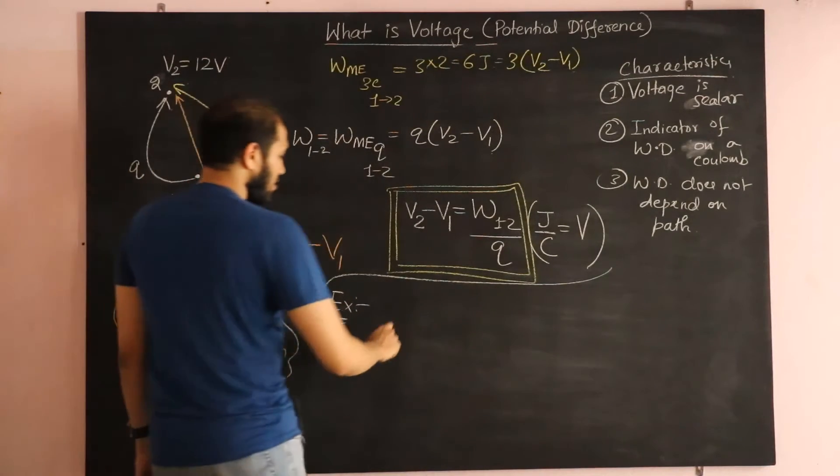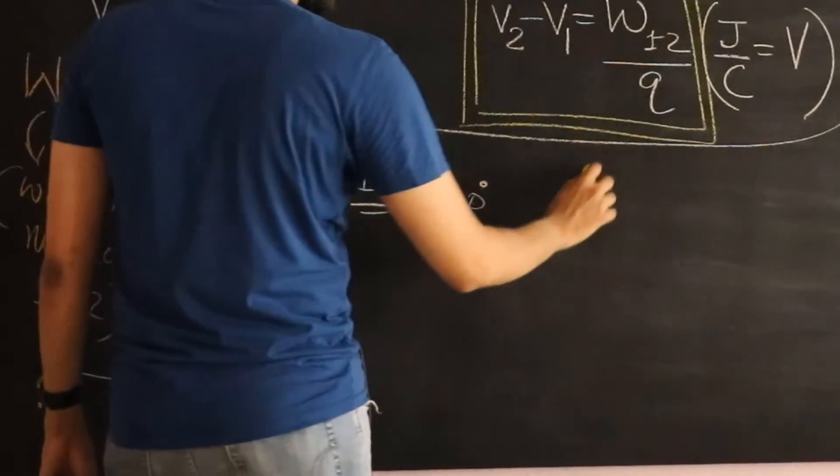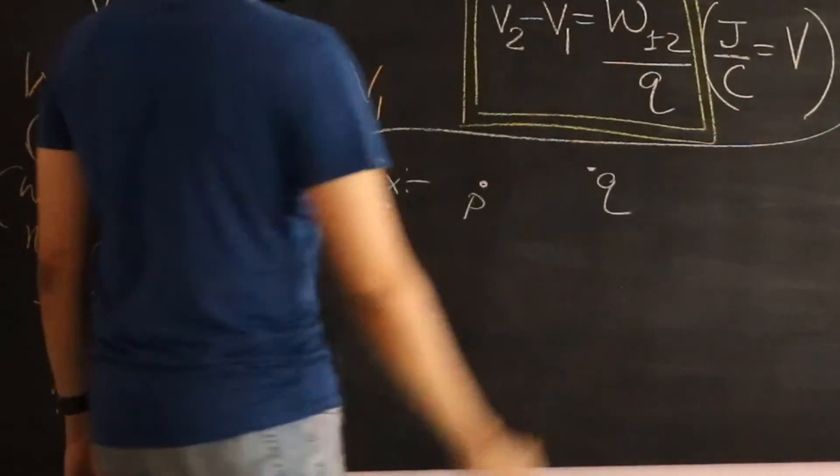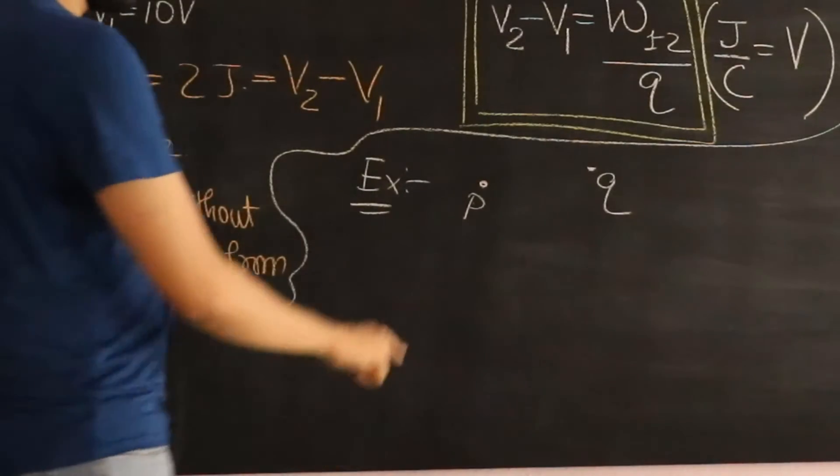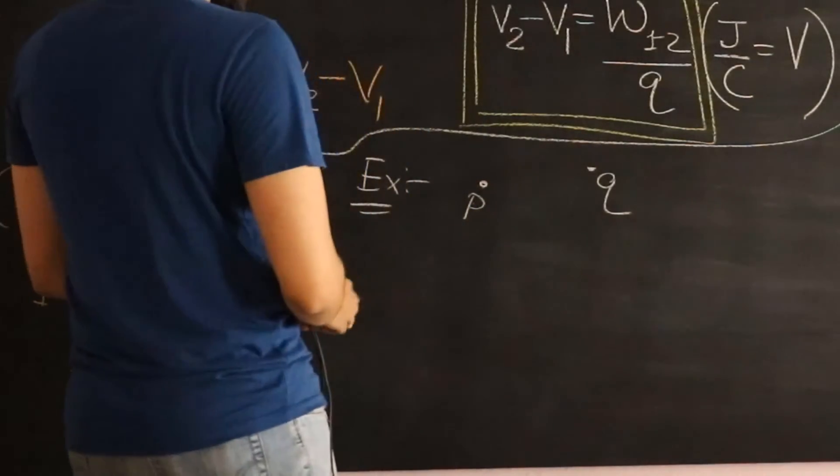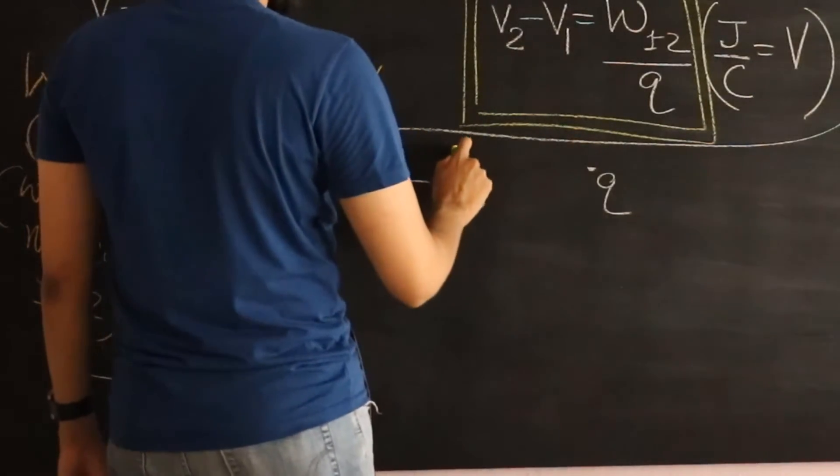So if I take two more points. Let's call this point as point P. Let's call this as point Q. And let's say the point P has a potential. Let's call it as 5 volts.